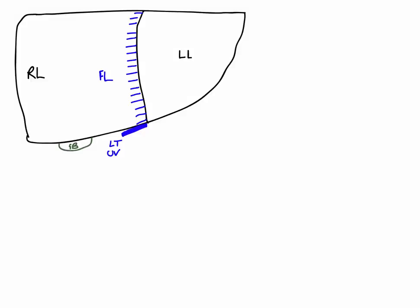To finish this diagram, we can draw out some more peritoneal reflections — this time the anterior layer of the coronary ligament. Remember, ligaments are double layers of peritoneum. Here we can see just one of those layers: the anterior layer of the coronary ligament, which passes towards the diaphragm. Later we'll see the posterior layer, which creates an area on the posterior visceral surface not covered by peritoneum — known as the bare area.